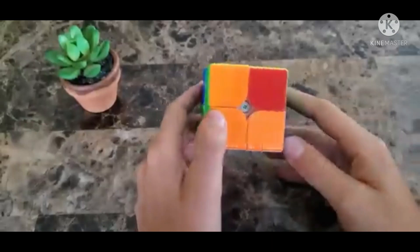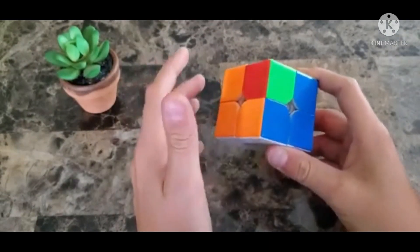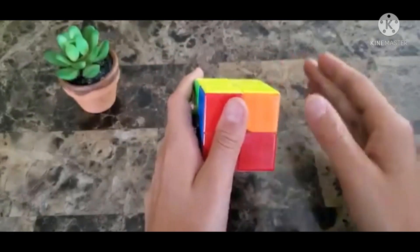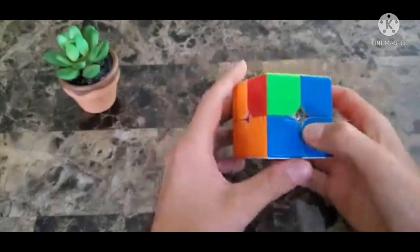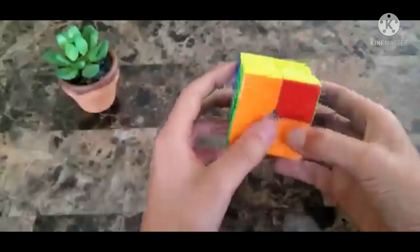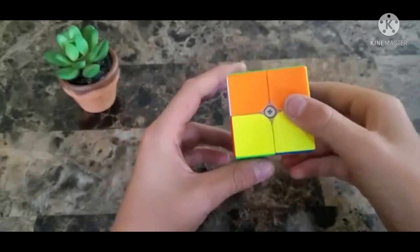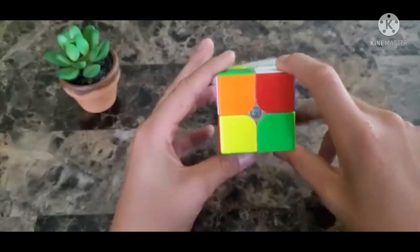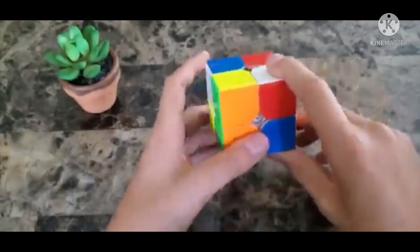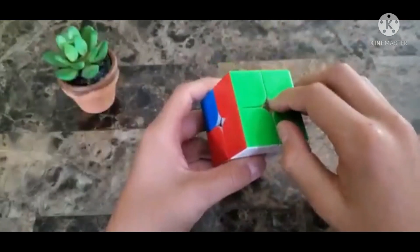Okay so we have this case right now on PLL. There's only two possible cases or algorithms that you would need to do on this. So for this one you're just gonna do the same move except once or twice. And then on the other case you'll just need to do the same move once. So hold it any way you like and do this algorithm.